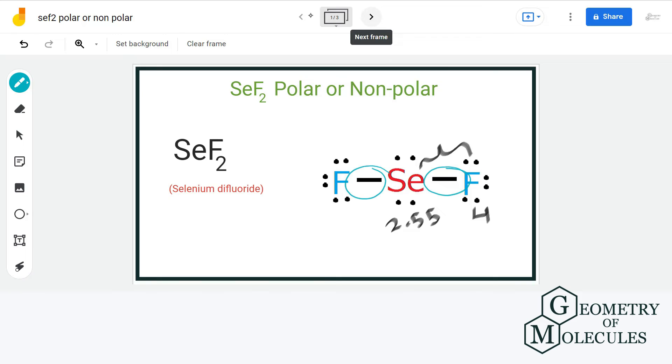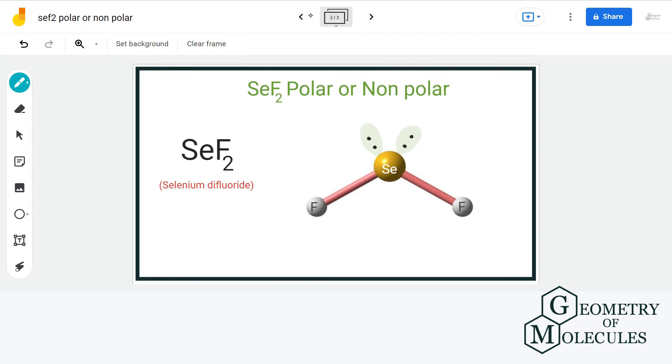When we look at the molecular structure, it is bent, and the reason behind that is the repulsion force exerted by these lone pairs. And the dipole moment of selenium-fluoride bond will be towards fluorine as it is the more electronegative element.